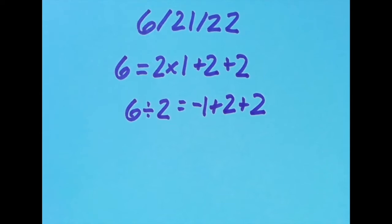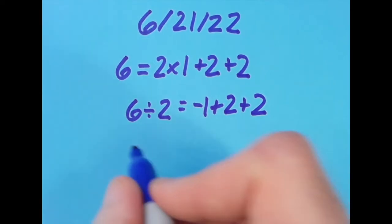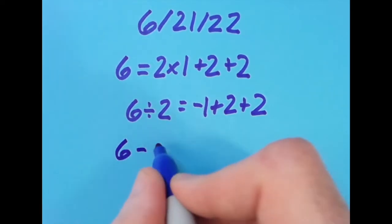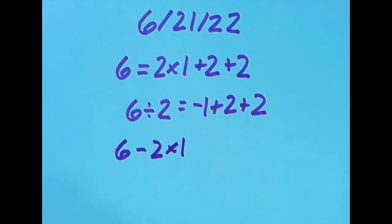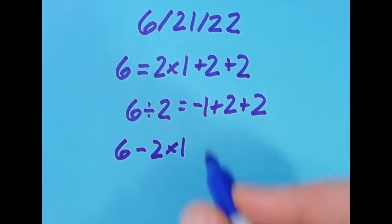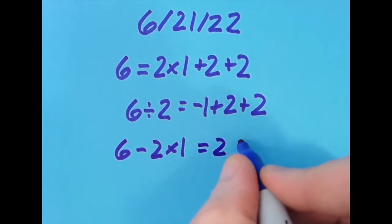So then I tried it with the equal sign over one more spot to the right and here I came up with 6 minus 2 times 1. Now we have to do the multiplication first so this gives us 2 here. 6 minus 2 is 4 and so is 2 times 2.